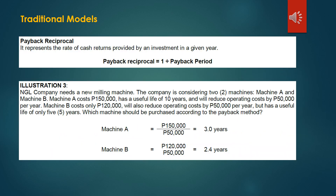Aside from the payback method, we also have the payback reciprocal, which represents the rate of cash returns provided by an investment in a given year. To solve for the payback reciprocal, we use the formula: 1 divided by the payback period.